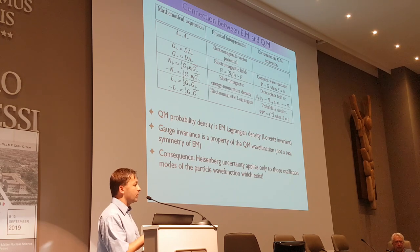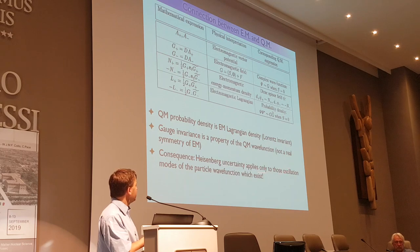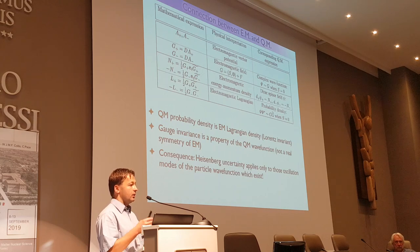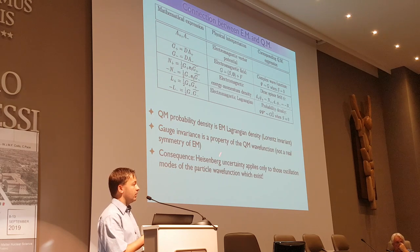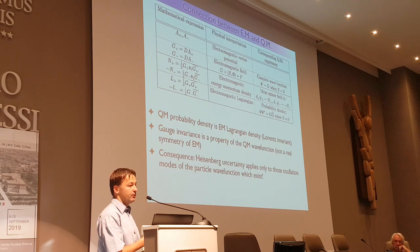Another important consequence I will use in my talk is that we need a more sophisticated understanding of Heisenberg uncertainty. In our understanding, Heisenberg uncertainty applies only to those oscillation modes of the wave function which exist. An electron as a particle can have internal and orbital oscillations, and in the ordinary wave function there are more oscillation modes than in the general solution. You cannot apply the uncertainty principle to those oscillation modes which do not exist, only to those actually present in the solution.